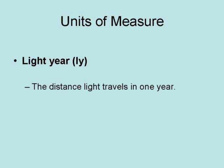The next unit of measure is the light year. This is the distance that light travels in one year. Note, this is a unit of distance, not time. One light year equals 9,460,528,400,000 kilometers.